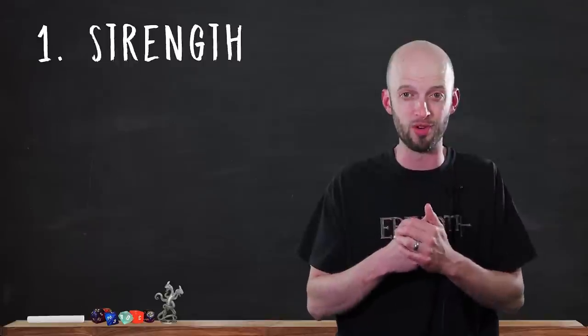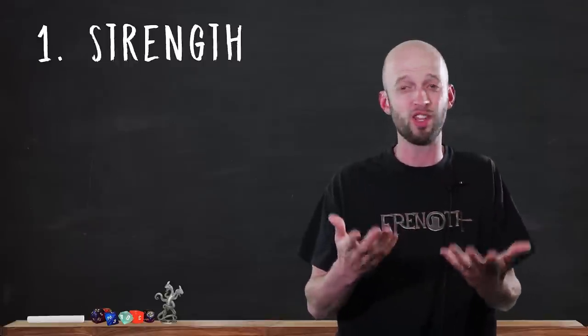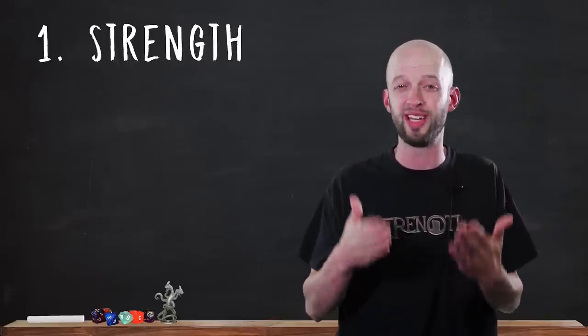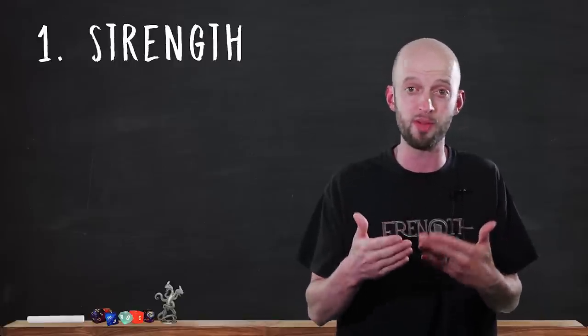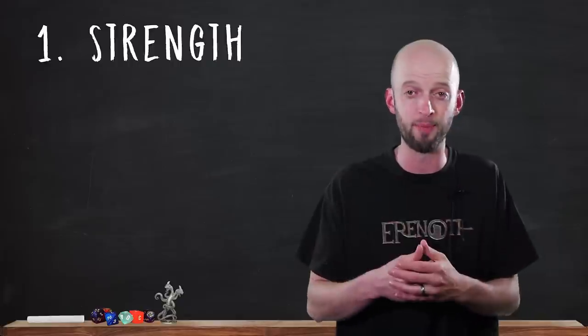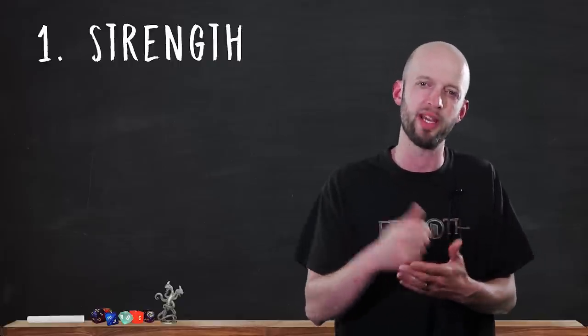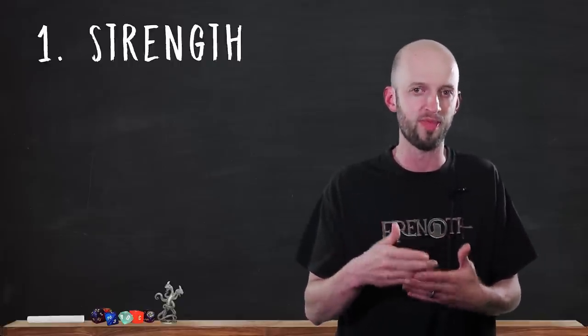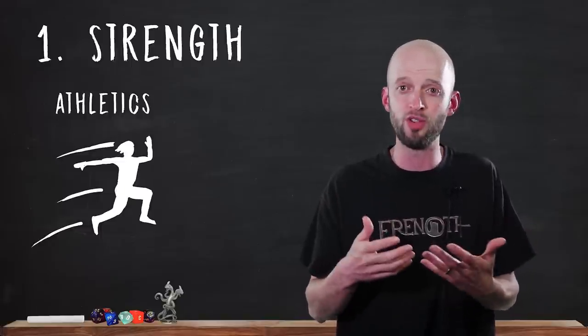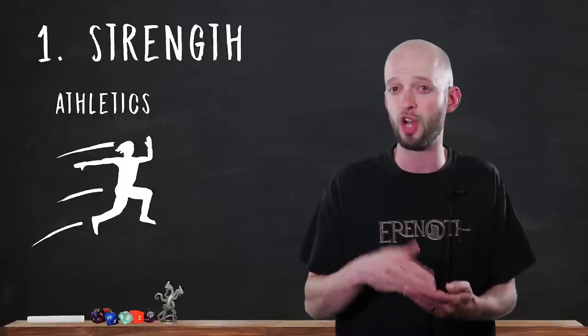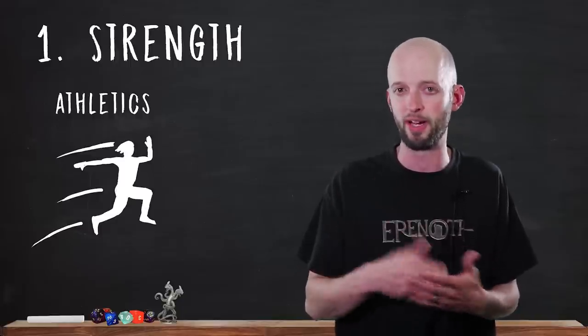The first of the six ability scores is Strength. Strength is physical power, the ability to exert force. You use Strength when you want to lift, pull, push, or break something, or force your way through a space. For Skills, Athletics is the only strength-based skill on the list. It'll be used in situations where your character is jumping, climbing, or swimming.